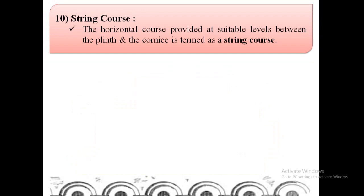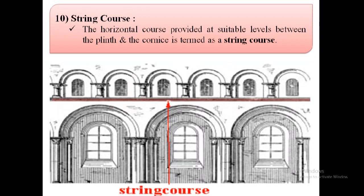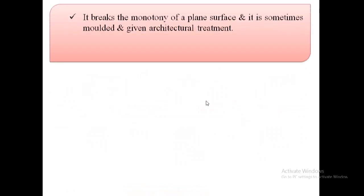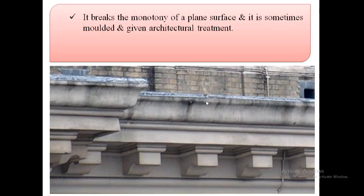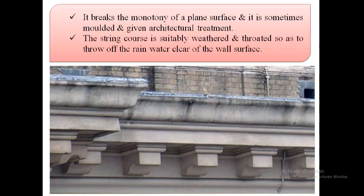The next term is string course. The horizontal course provided at suitable levels between the plinth and the cornice is termed as string course. As shown in the image, the red line indicates the string course. It breaks the monotony of a plain surface and is sometimes molded and given architectural treatment. The string course is suitably weathered and throated so as to throw off rainwater clear of the wall surface.